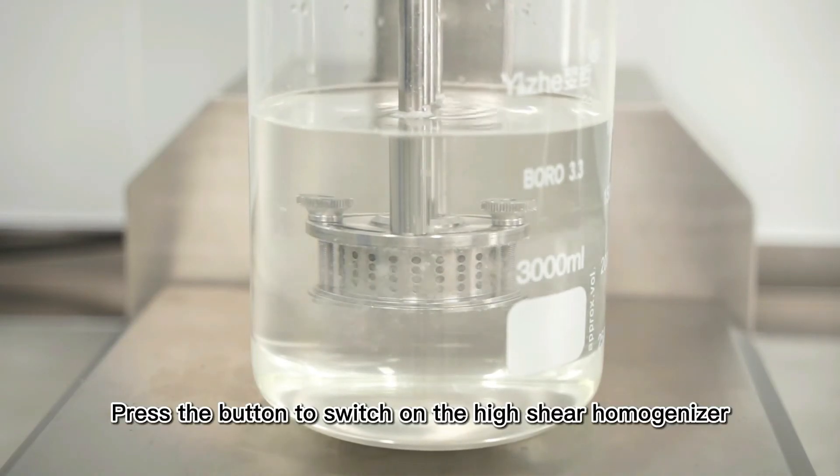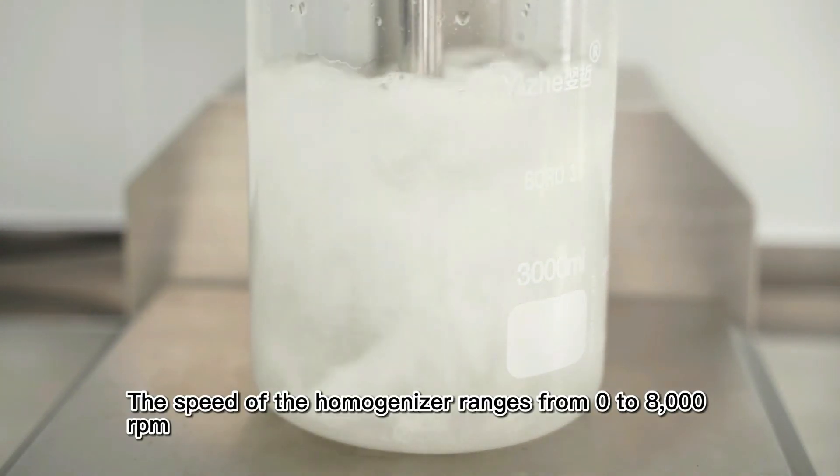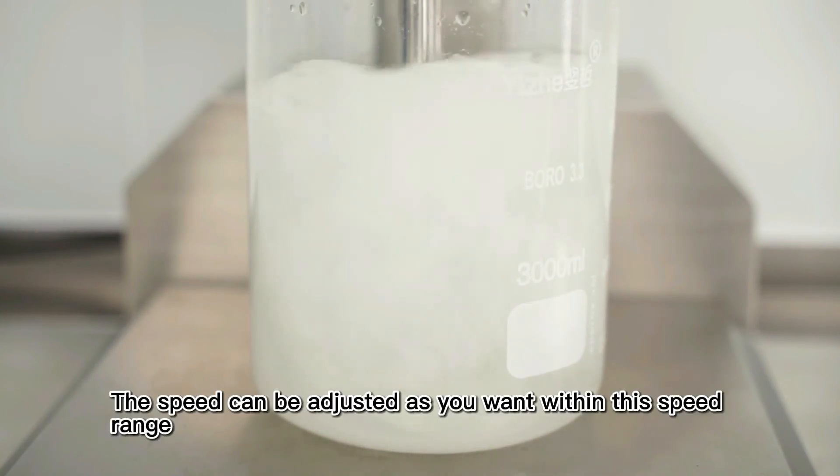Press the button to switch on the high-shear homogenizer. The speed of the homogenizer ranges from 0 to 8,000 RPM and can be adjusted as needed within this range.